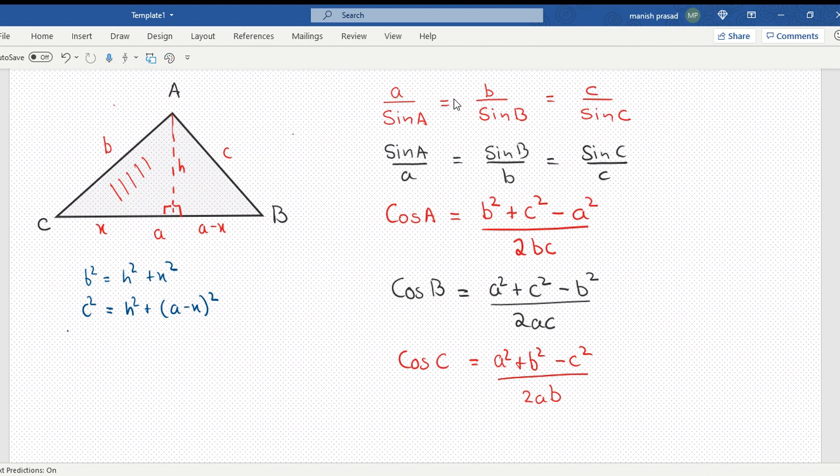Now we subtract both of them. We subtract both the equations. So it becomes B square minus C square. X square cancels out. This will become A square plus X square minus 2AX. Open the brackets. If we open the brackets, what are we going to get? X square minus A square minus X square plus 2AX. X square and X square cancel out.